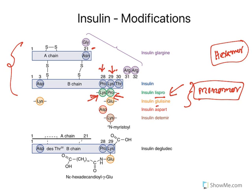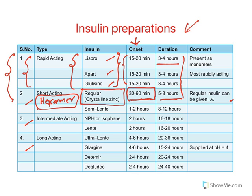Because the onset is so rapid, whenever people take these insulins, they need to take food within 15 to 20 minutes. Otherwise, all the glucose will be taken back into the cells and that results in hypoglycemia. Remember this important point.